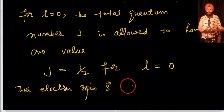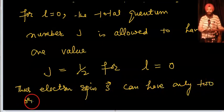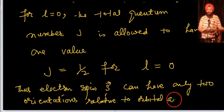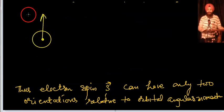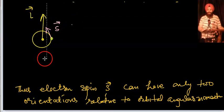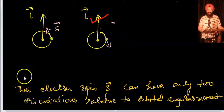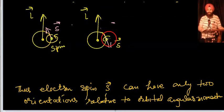Thus, the electron spin S vector can have only two orientations with respect to the direction of the orbital angular momentum L vector. Spin will take only two values: one is spin up and the other is exactly opposite — spin down. It is not possible for spin to have any other value. With respect to L vector, spin takes only the values +1/2 and −1/2, depending upon clockwise or anti-clockwise rotation.